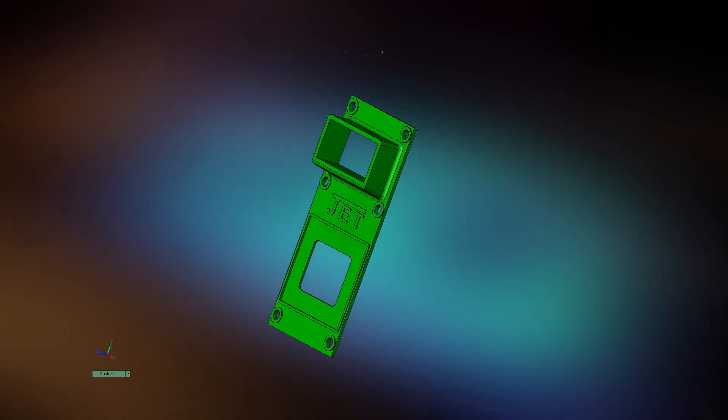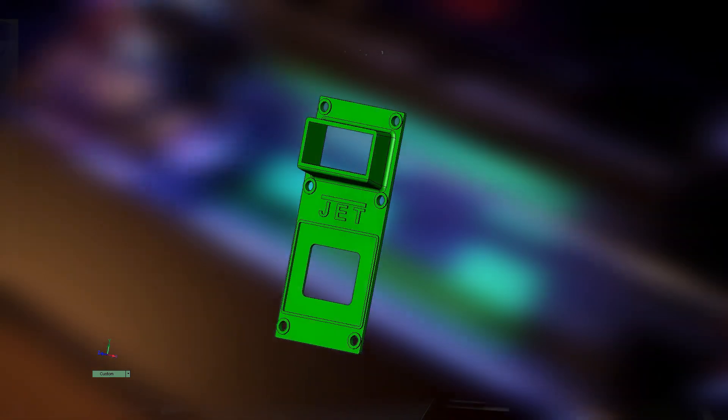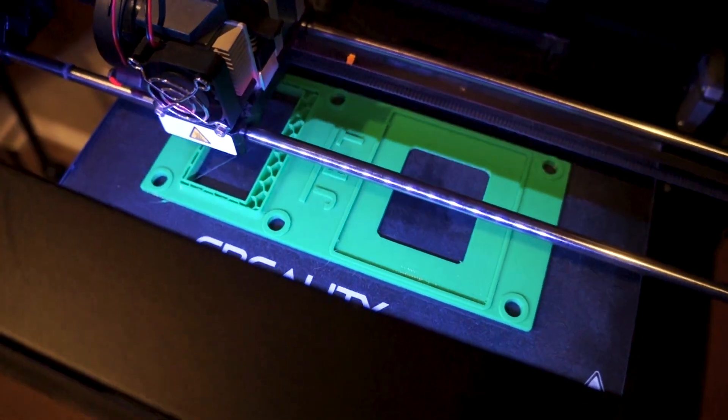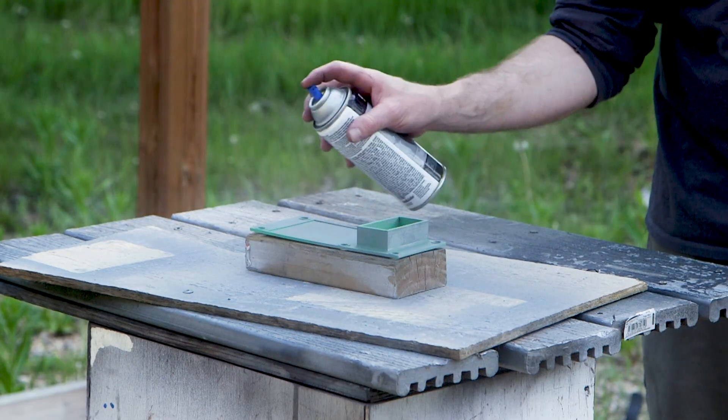The reason we installed the VFD was to get easily adjustable spindle speeds but we need to know what those speeds are. So the next thing to do is install a tachometer. I want the tach to sit on the front of the machine so I designed a new front plate in SOLIDWORKS. I then 3D printed that on my MakerBot replicator and painted it gray to match the rest of the mill.